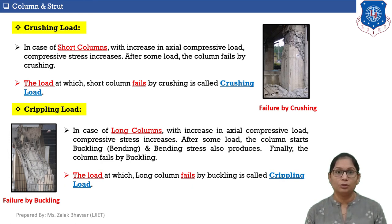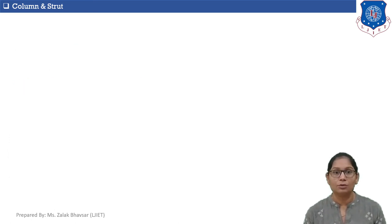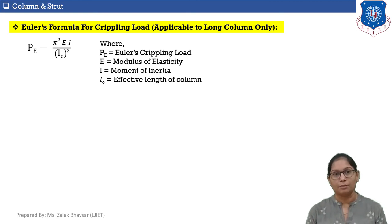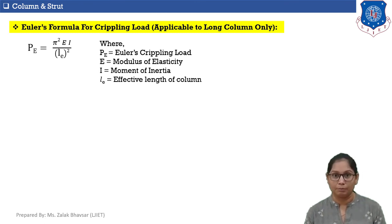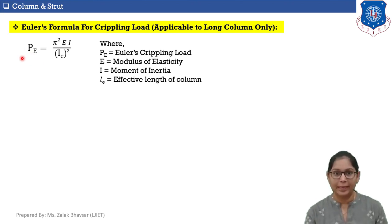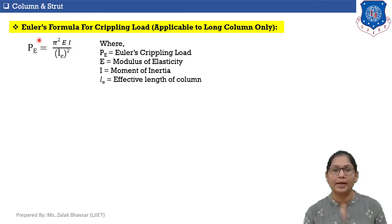Now let's discuss the formulas to calculate crushing and crippling loads. Euler's formula was invented by the scientist Euler and is used to calculate crippling load — it is applicable for long columns only. Euler's formula is: P_E equals pi squared times E times I divided by L_E squared, where P_E is Euler's crippling load, E is Young's modulus, I is the moment of inertia, and L_E is the effective length of the column.